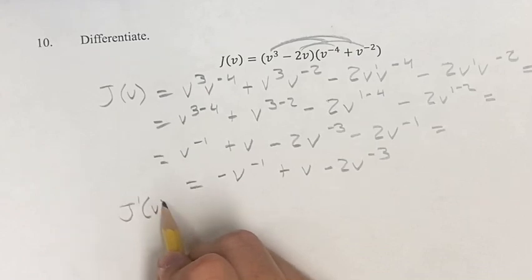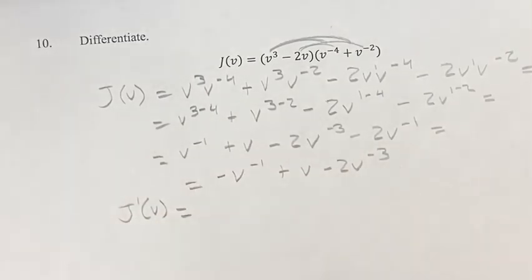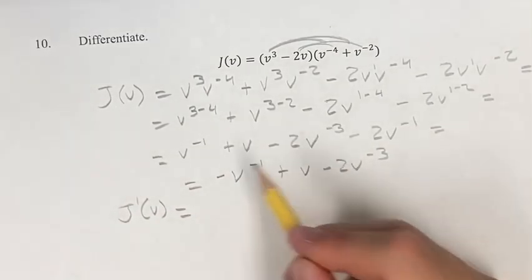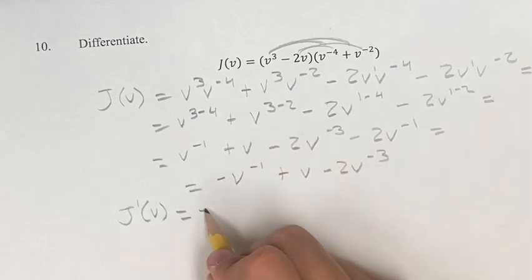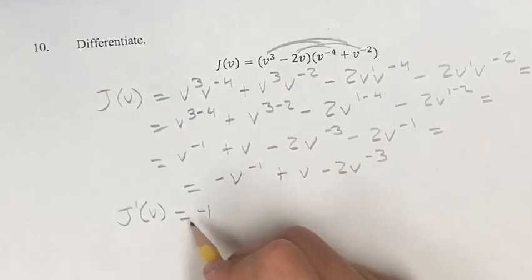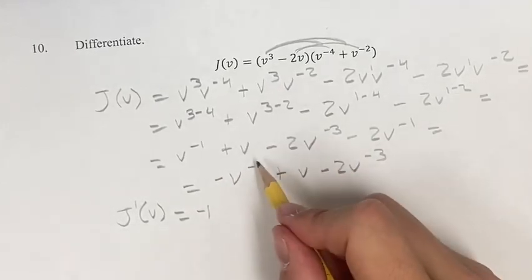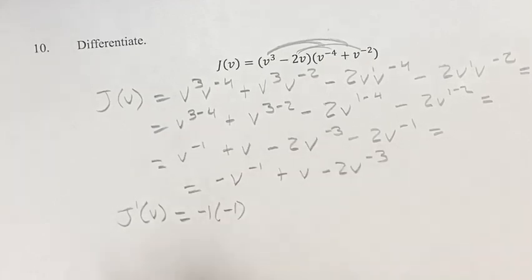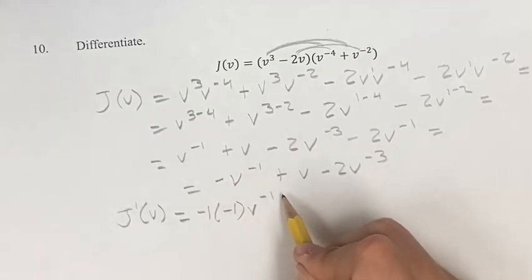Now, you can take the derivative of that by just taking the derivative of each of these terms. The derivative of negative v to the negative 1. First of all, get that negative sign out in front. Take that as negative 1 for your coefficient. Then you're multiplying it by the exponent, and then your new exponent is the old one minus 1.